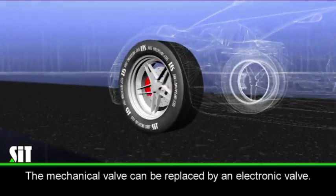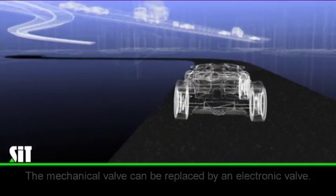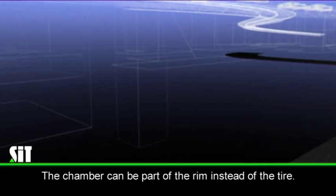The mechanical valve can optionally be replaced by an electronic valve. The chamber can be part of the rim instead of the tire wall.